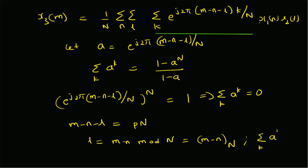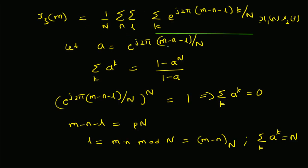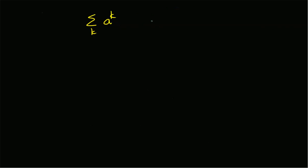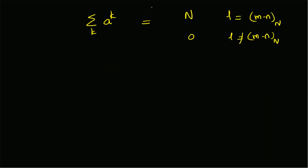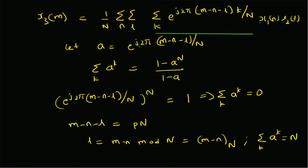When a = 1, the sum becomes a sum of N ones, so it equals N. Therefore, the sum over k of a^k equals N whenever l = (m-n) mod N, and equals zero otherwise. In other words, the sum is non-zero only when the difference (m-n-l) is a multiple of N.